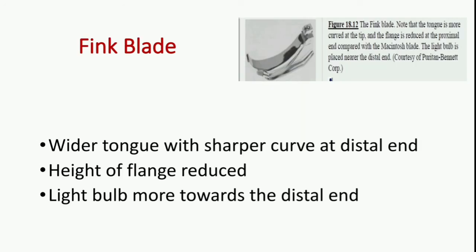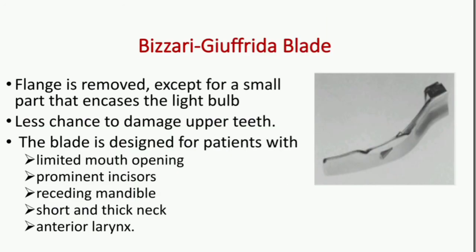The Fink blade has a wider tongue with a sharper curve at the tail end; the height of the flange is reduced and the light bulb is more towards the distal end. The Bizzari Giuffrida blade has the flange removed except for a small part that encompasses the light bulb, so there is less chance of damaging the upper teeth. It is designed for patients with limited mouth opening, prominent incisor teeth, receding mandible, short and thick neck, or an anterior larynx.